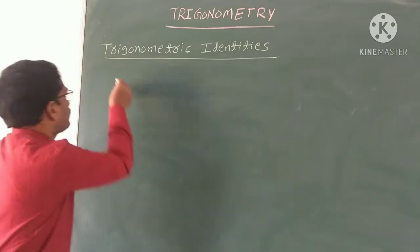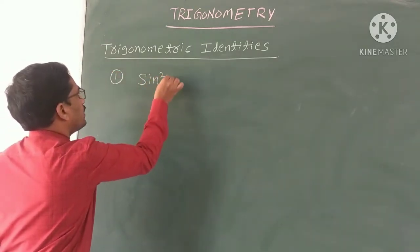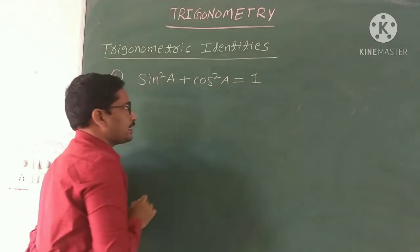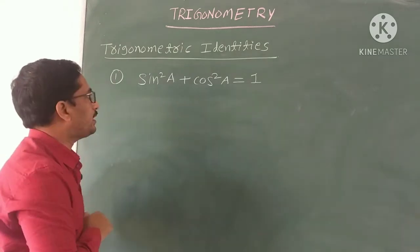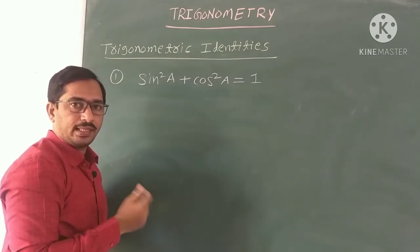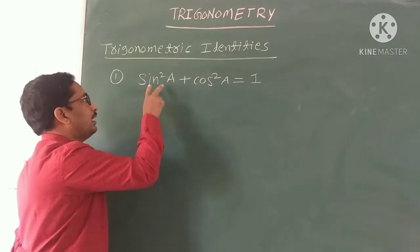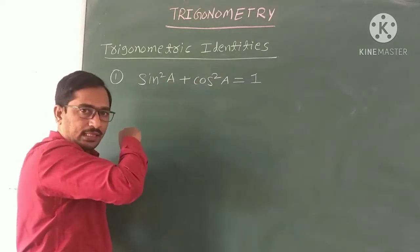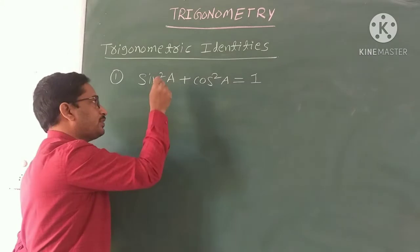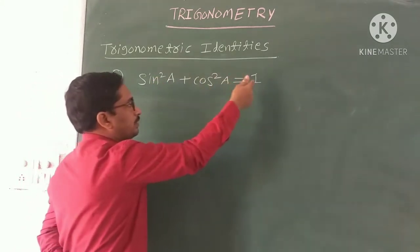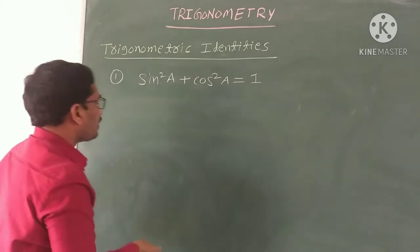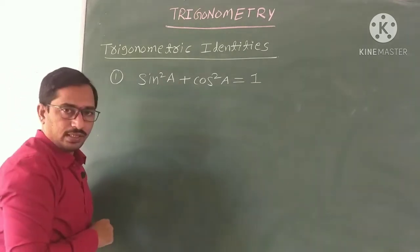Now see the first identity: sin²A + cos²A = 1. This is the first trigonometric identity. Here the variable is A, meaning any angle. While substituting any angle in place of A, this equation is satisfied — LHS equals RHS. For example, substituting A = 30°, the left side equals 1. So this is called an identity — it is true for all variables.